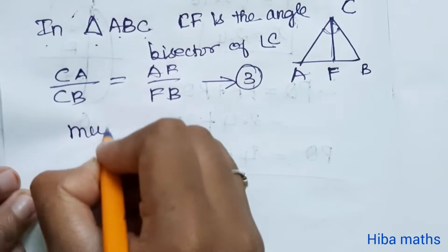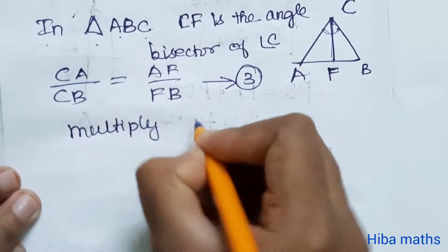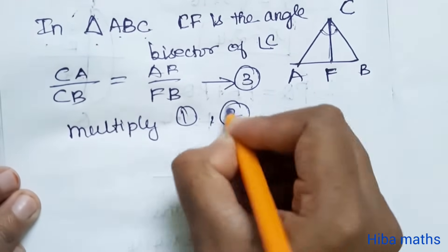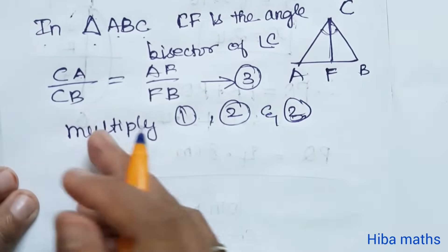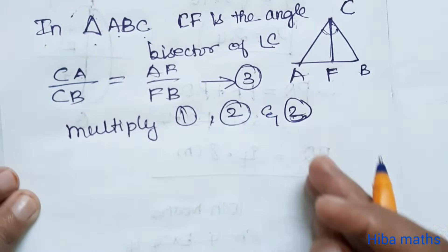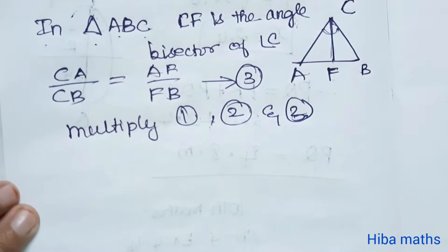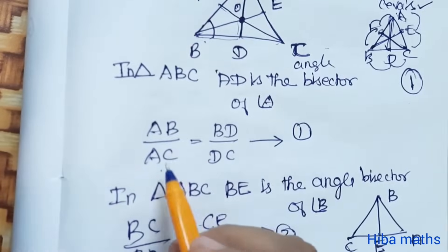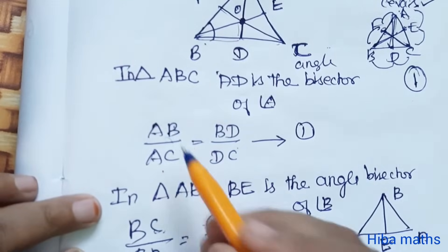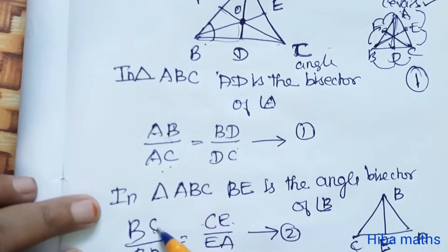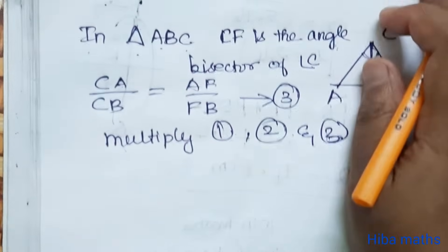Next, multiply first equation, second equation and third equation. LHS side: AB/AC × BC/BA × CA/CB. RHS side: BD/DC × CE/EA × AF/FB.